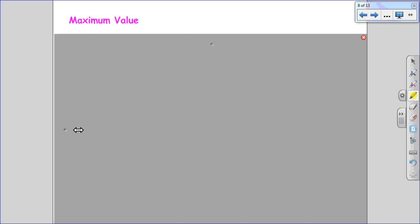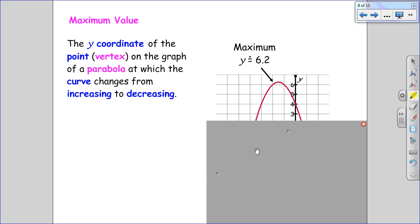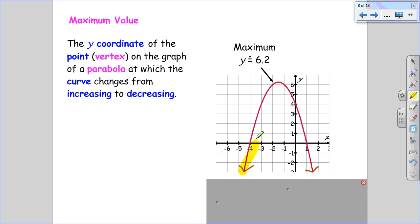The maximum value, on the other hand, is still the y-coordinate of the vertex, but it's where the function changes from increasing to decreasing. Obviously I'm not very good at tracing. Sorry guys. And you can see the maximum looks like it's around 6.2, but because it's a graph we don't get a very good idea of what the exact value is.